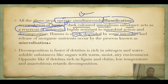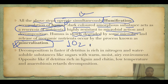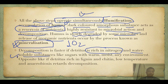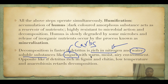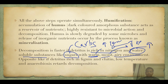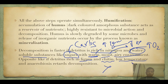Humification is the accumulation of humus — a dark brown, amorphous substance that is a reservoir of nutrients and highly resistant to microbial action. Humus is slowly degraded by some microbes releasing inorganic nutrients — this is called mineralization, and it is a very slow process due to decreased oxygen. Decomposition is faster when detritus is rich in nitrogen and water-soluble substances like sugars, and when the environment is warm, moist, and airy — meaning increased temperature, humidity, and oxygen. Decomposition is retarded when detritus contains complex compounds like lignin and chitin, in very low temperatures, or in anaerobic (lack of oxygen) conditions.